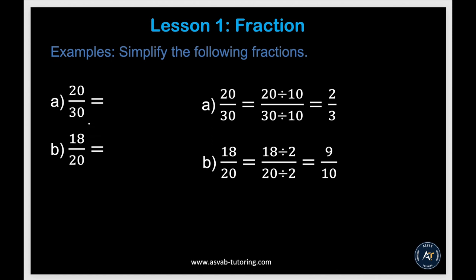The first thing we'll learn is how to simplify fractions. If you want to simplify a fraction, you have to find a number you can divide both the top and bottom by. For 20 over 30, that number is 10. Dividing 20 and 30 by 10 gives you 2 thirds. Same way, 18 over 20 divided on both sides by 2 gives you 9 over 10.